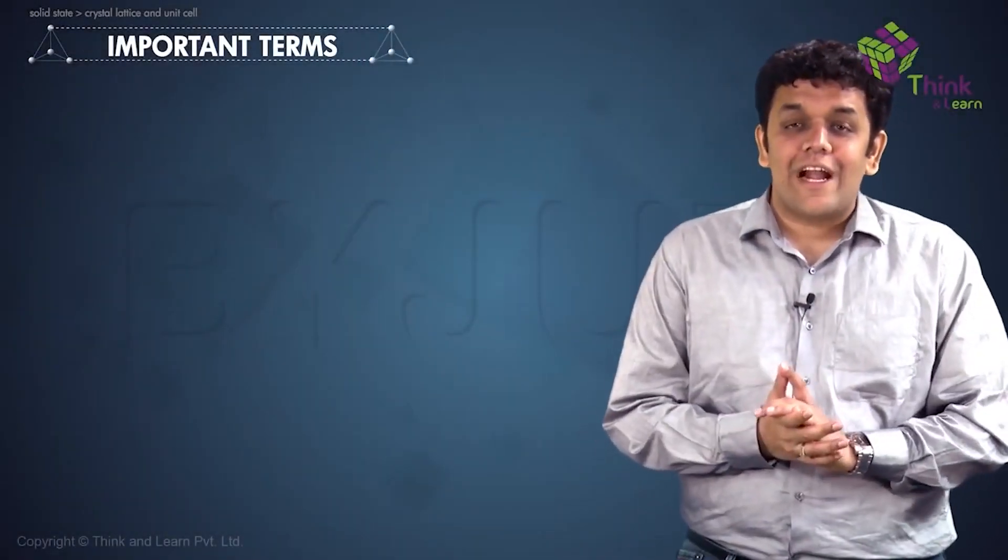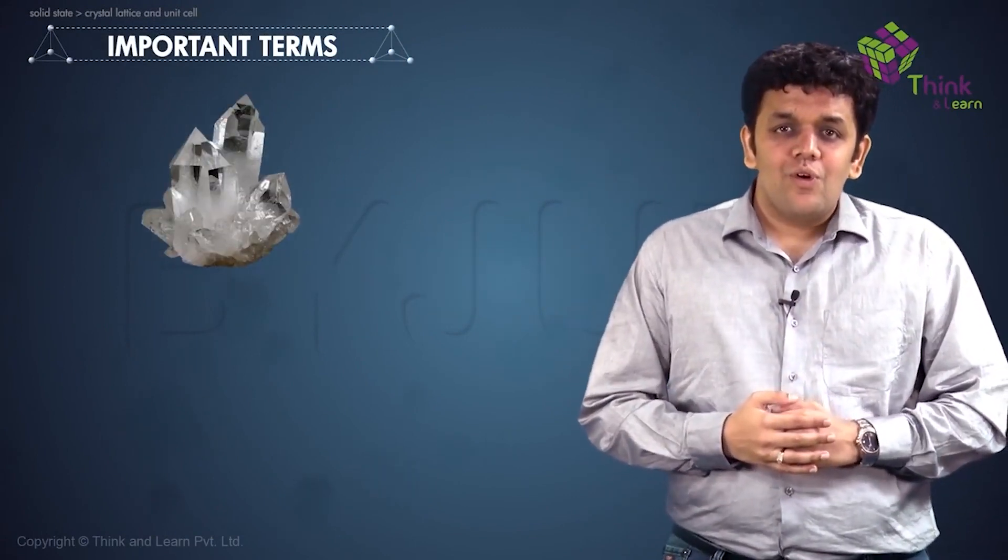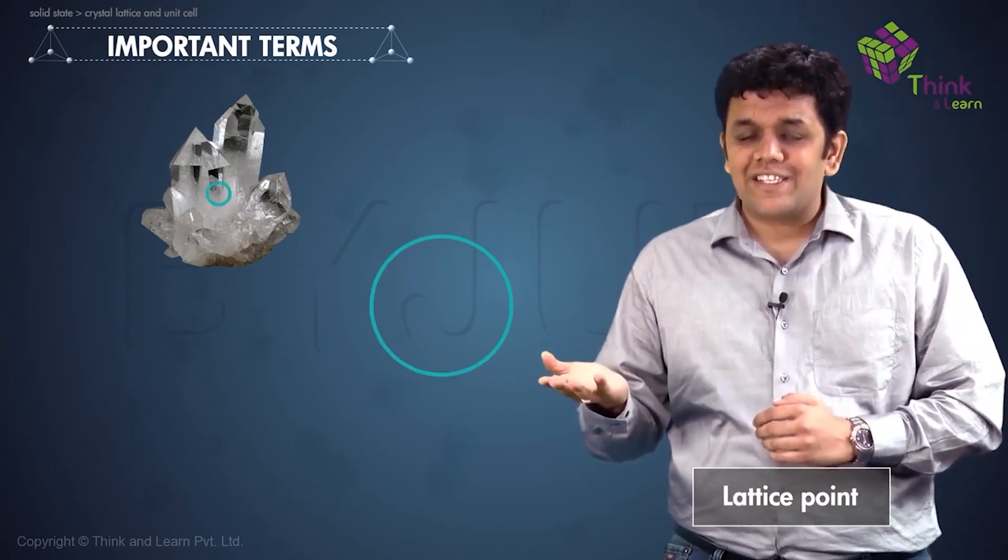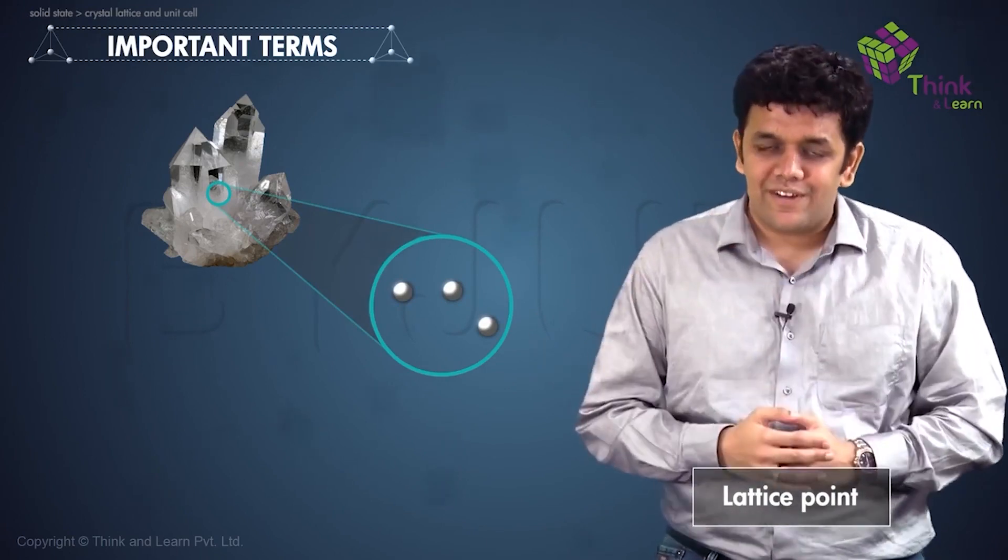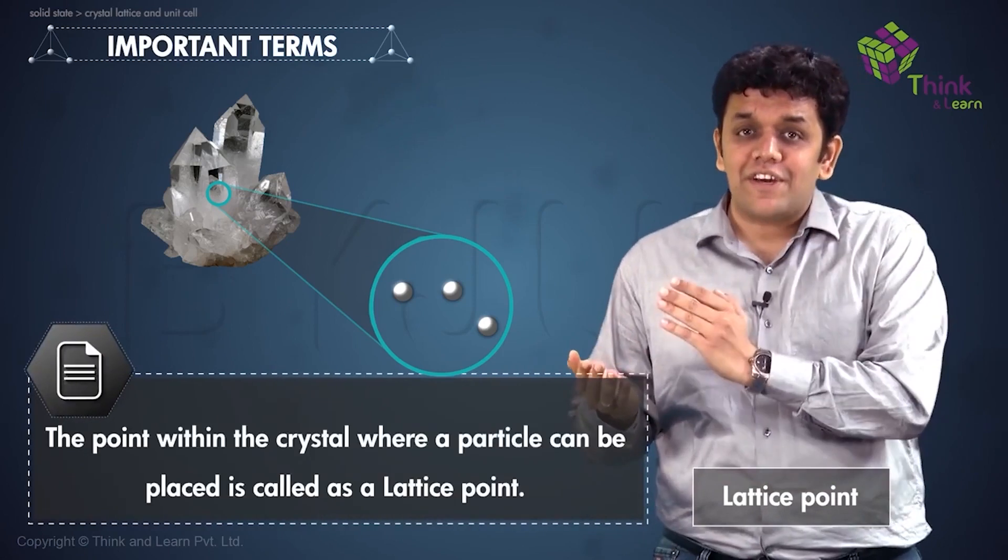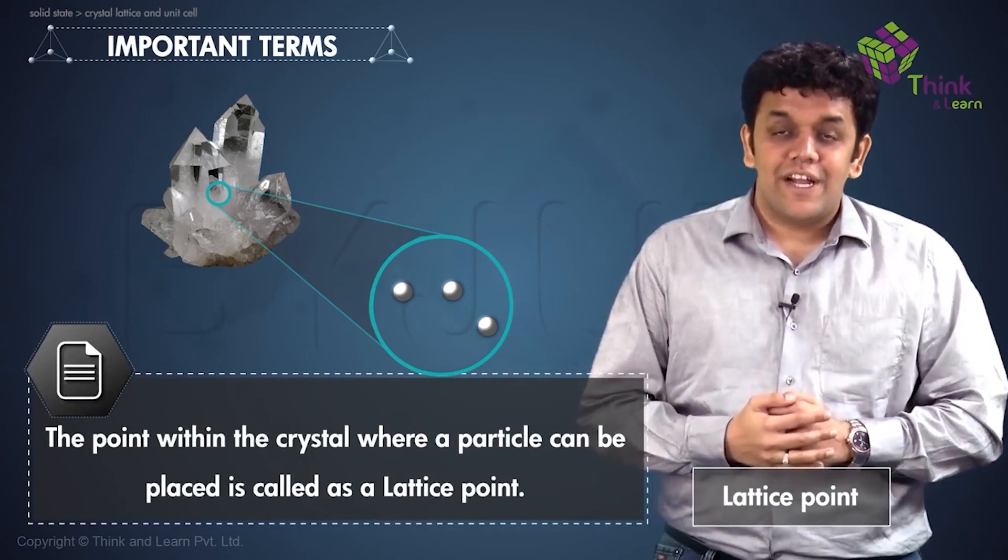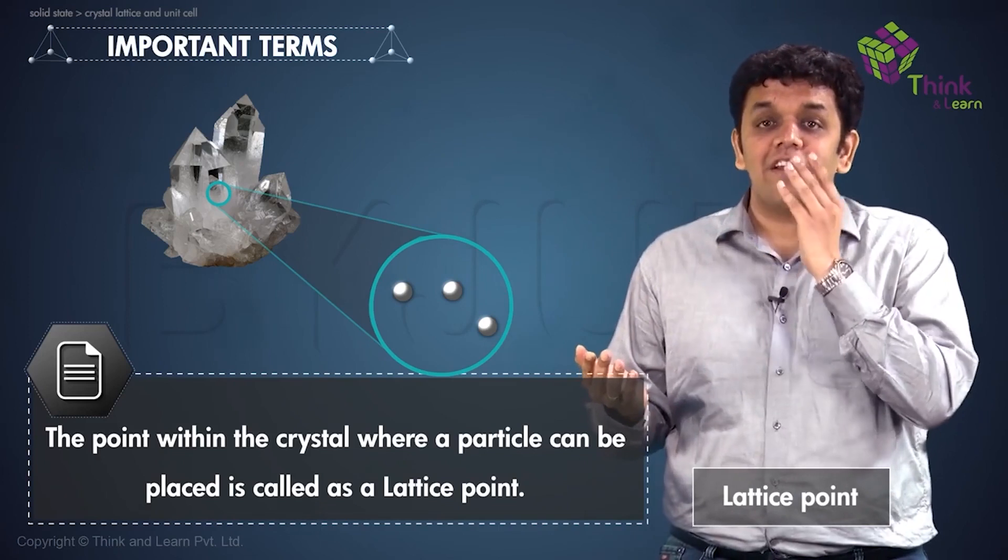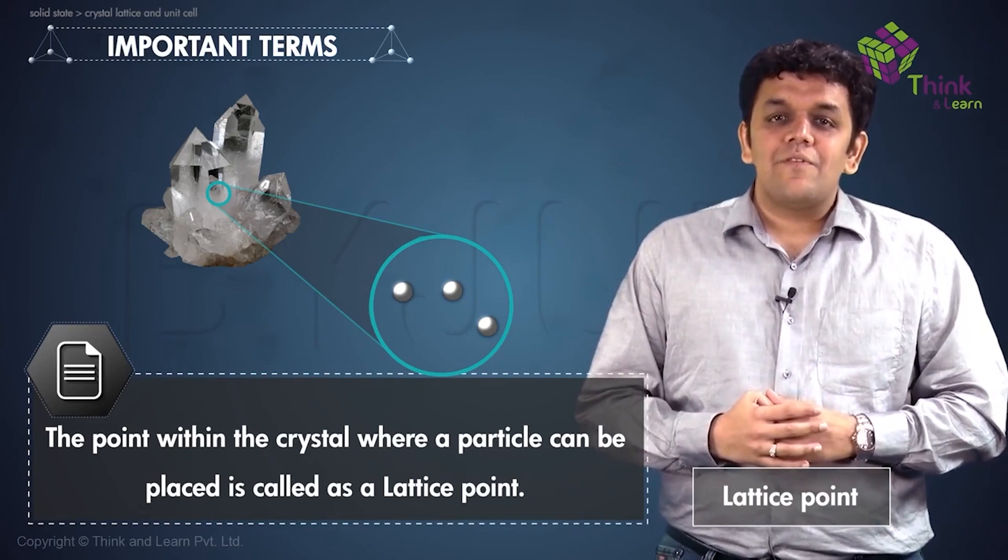All right guys, now let us look at a few important terms within solid state. Let us take a crystalline solid something like this. Now we need to know one term called lattice points. Within this crystalline solid, are you noticing the particles? The point within the crystal where a particle can be placed is called as a lattice point. It is very important definition guys, please take note.